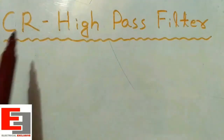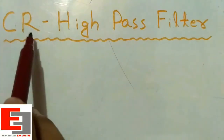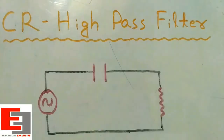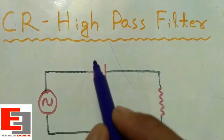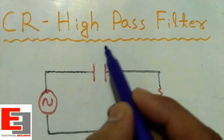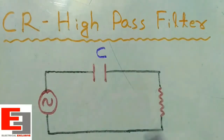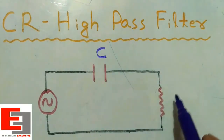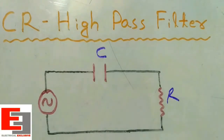To design a CR high pass filter we need a capacitor and a resistor. This is the CR high pass filter circuit. Suppose this capacitor has capacitance C and this resistor has resistance R. Now we need to calculate the cutoff frequency.